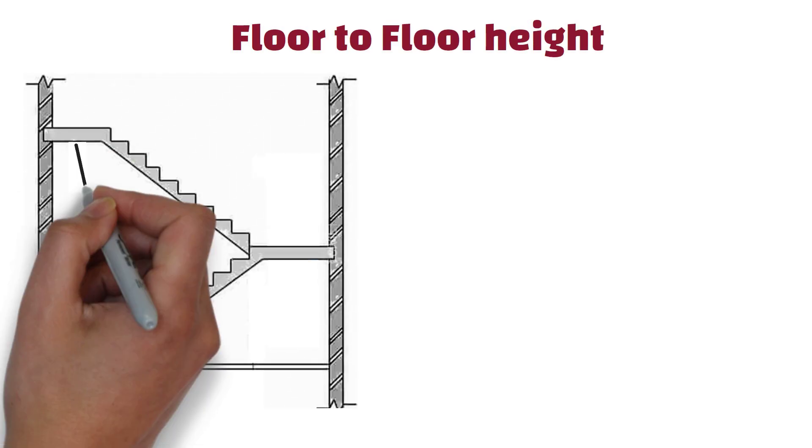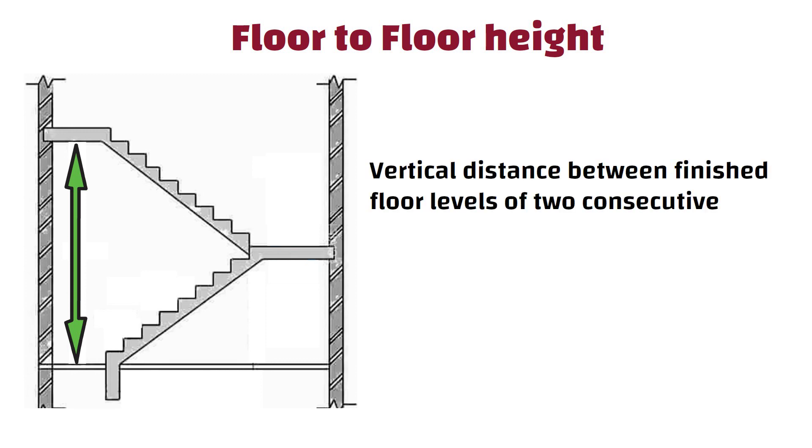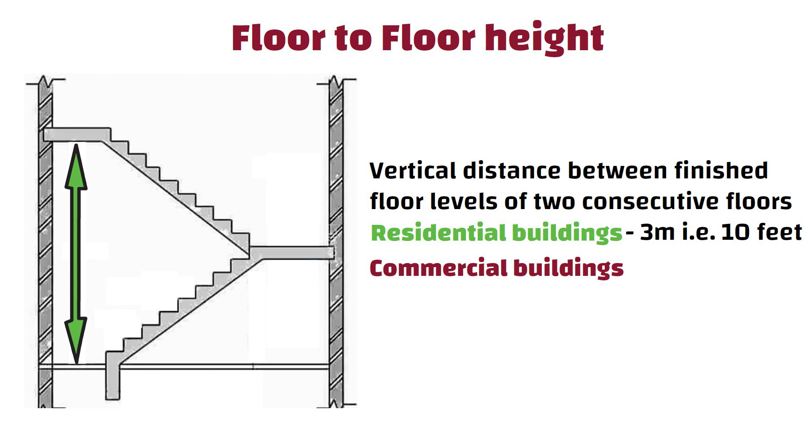11. Floor-to-floor height. The floor-to-floor height in a staircase refers to the vertical distance between finished floor levels of two consecutive floors in a building. Generally, in residential buildings, the floor-to-floor height is 3 meters, i.e. 10 feet. In commercial or public buildings, the floor-to-floor height may be higher, typically around 4 meters, i.e. 13 feet.